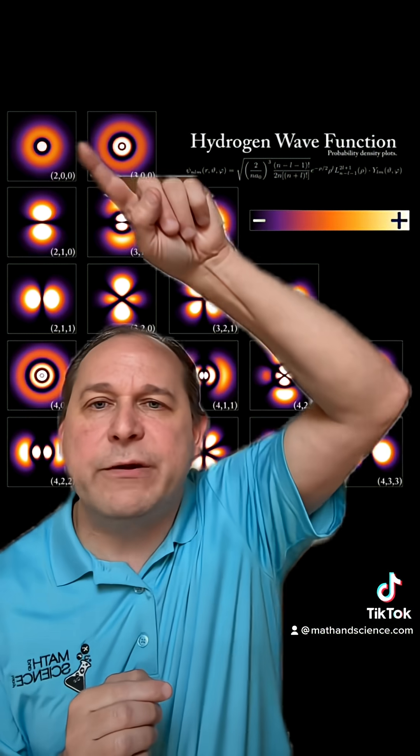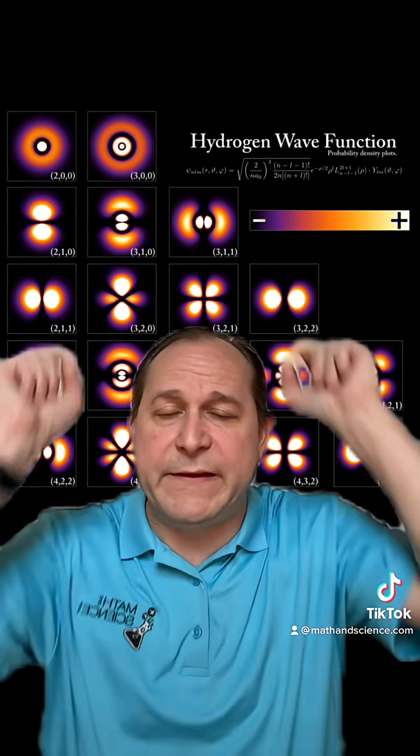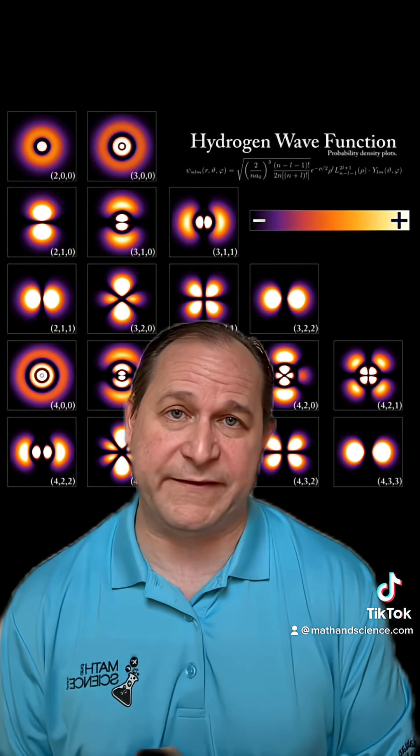But the crucial thing to point out here is that notice there's a fuzzy boundary here around all of these things. Everything's fuzzy, and that means the probability of finding an electron in any of these cases never goes to zero, even when you get really far away from the atom. It just gets closer and closer and closer to zero, but always above zero.